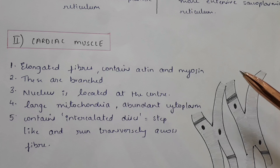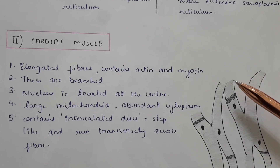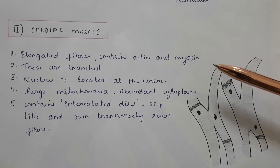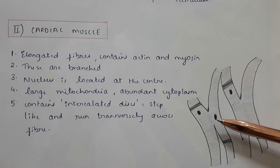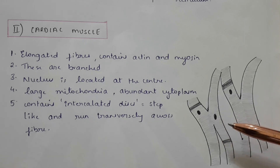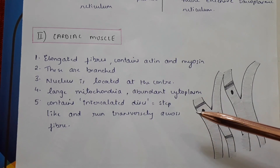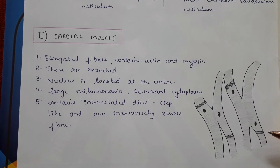The cardiac muscle comprises elongated fibers which contain actin and myosin. These fibers are branched, and the nucleus is located at the center. They have large mitochondria and abundant cytoplasm. These muscles contain intercalated discs, which are step-like and run transversely across the muscle fiber.